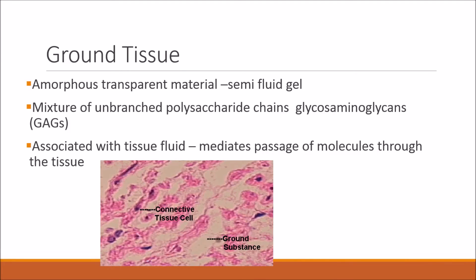The other component of connective tissue is ground substance. This is an amorphous, transparent material with the same consistency as a semi-fluid gel. It consists of unbranched polysaccharide chains called glycosaminoglycans, often abbreviated to GAGs. These are associated with tissue fluid and help to mediate the passage of molecules through the tissue.